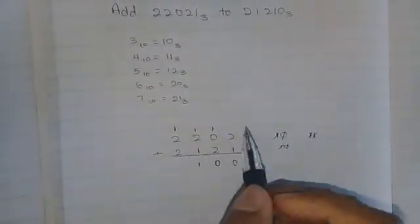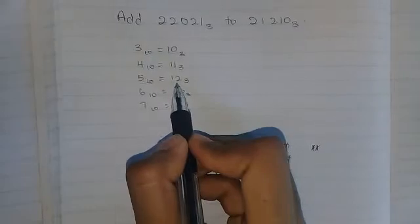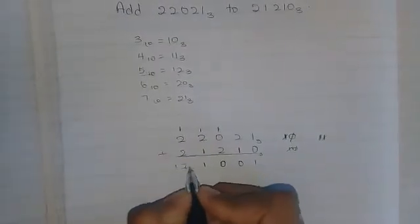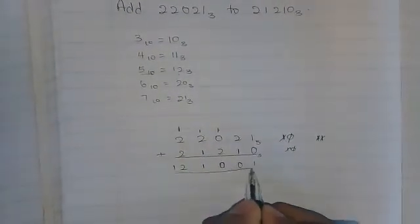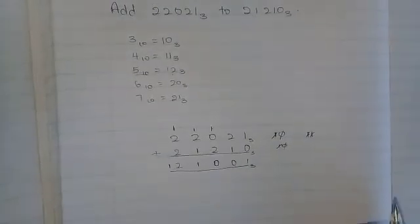So, 2 plus 2 plus 1 is equal to 5. 5 base 10 is equal to 12 base 3. And we put it under there. Draw our line. And our answer in base 3.